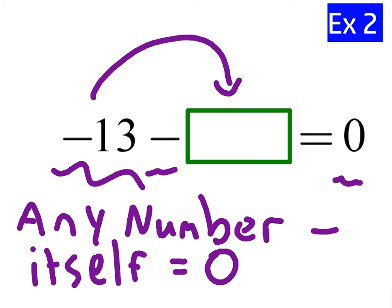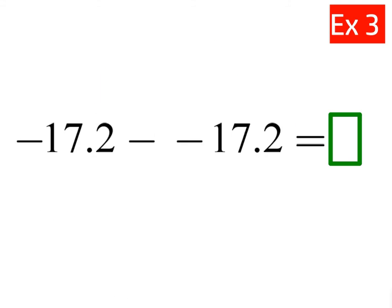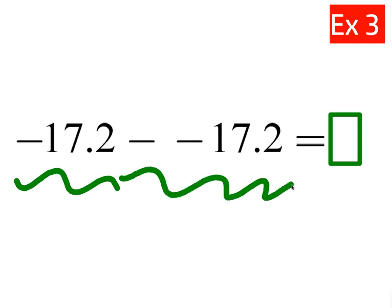Negative 13 minus itself would be negative 13 minus negative 13, which equals 0. That rule applies to all numbers, including decimals. Negative 17.2 minus itself, negative 17.2, gives you 0. If you owed somebody $17.20 and they took that debt away from you, it's the same as subtracting a negative number, and you would not owe them anything.